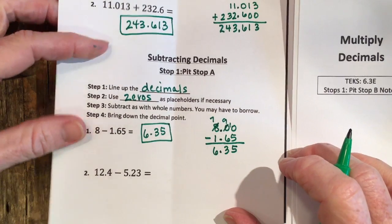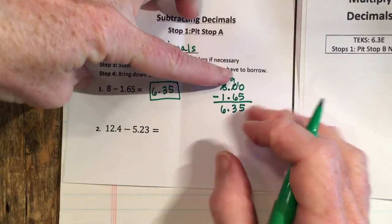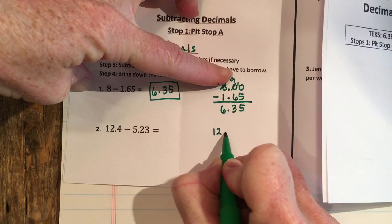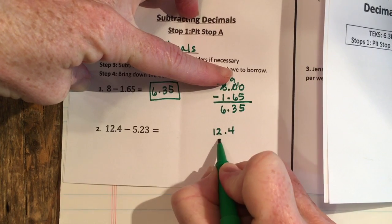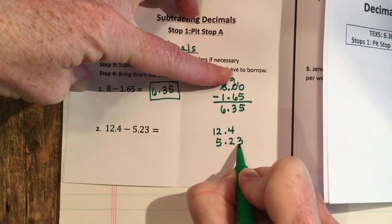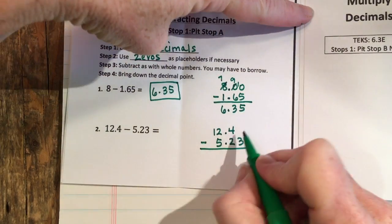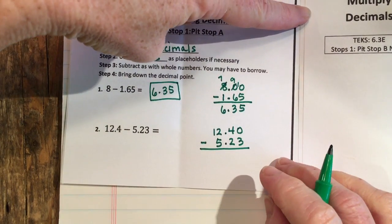All right, and the second problem I have 12.4 and 5.23. Again, I'm lining up my decimal points and subtracting.